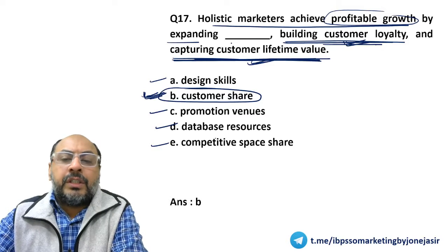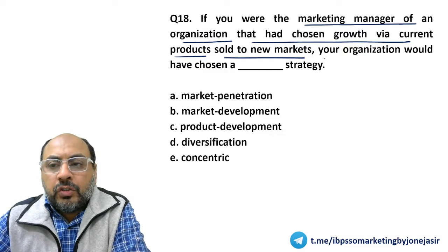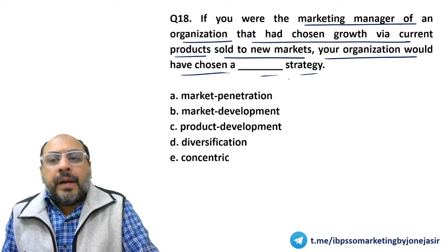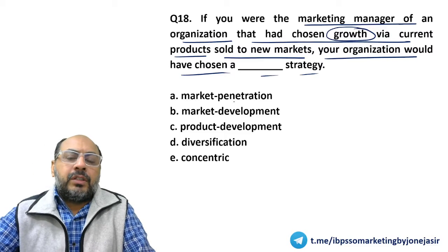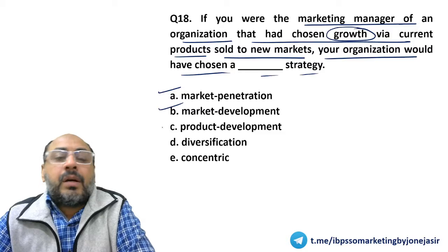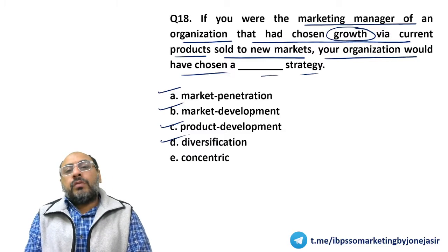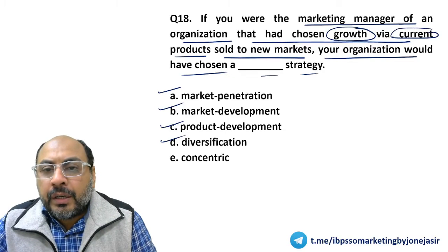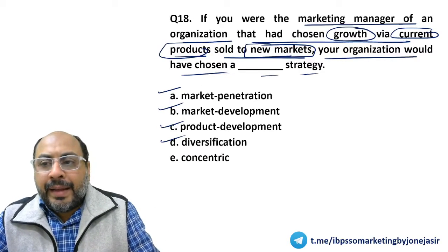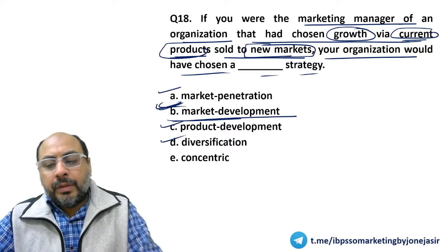The next question: if you were the marketing manager of an organization that has chosen growth via current products sold to new markets, your organization would have chosen a dash strategy. This question is about the Ansoff's growth matrix. The matrix has four quadrants: market penetration, market development, product development, and diversification. When you use current products in new markets, you are doing market development — that is the correct answer.